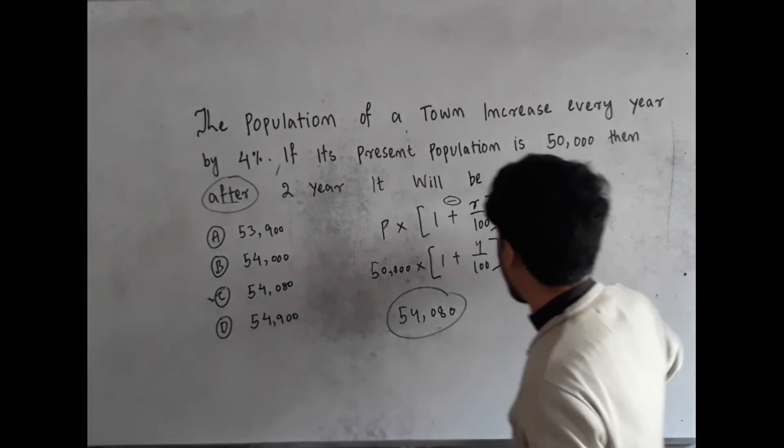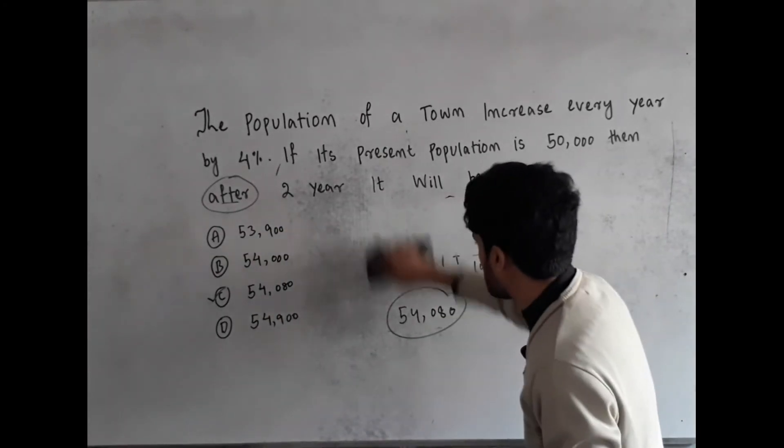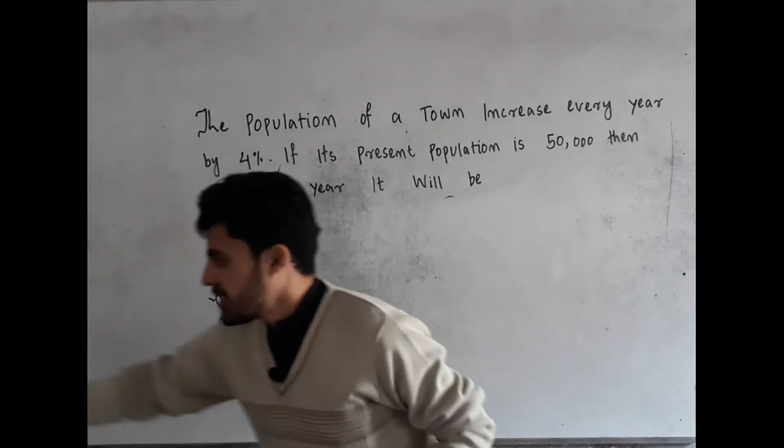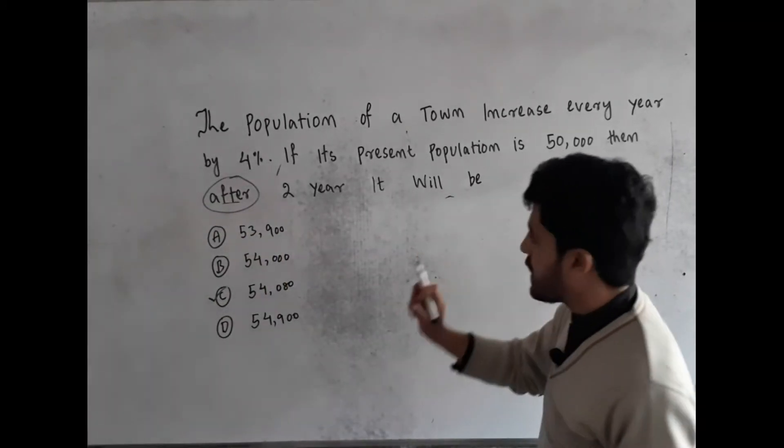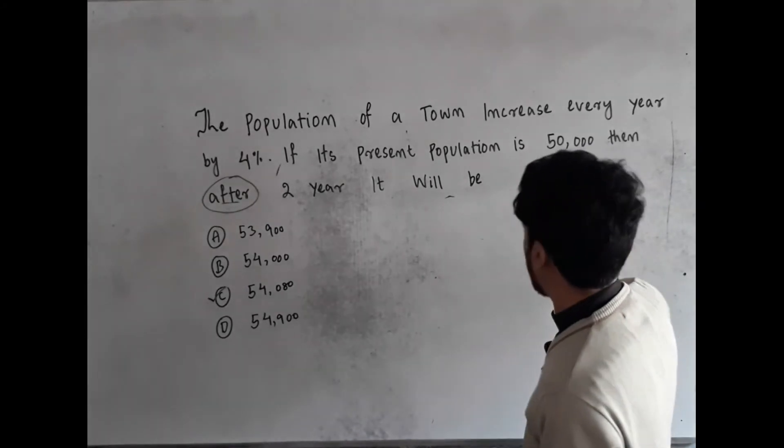The trick is very simple. Like I am going to teach you here. The trick is you have to find the percentage, 4 percentage of the 50,000.